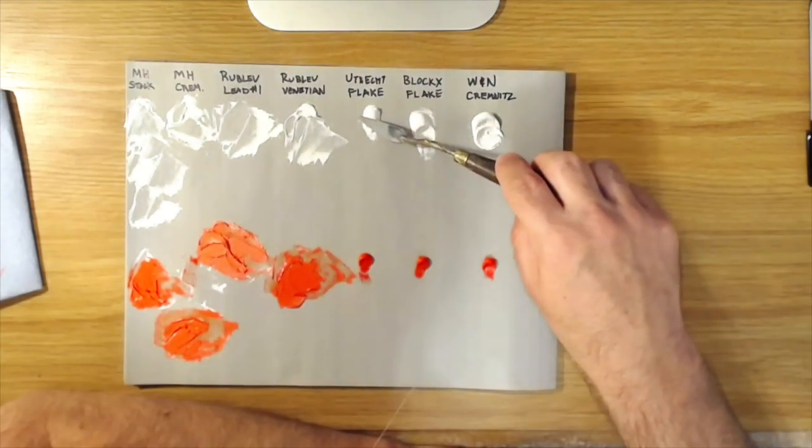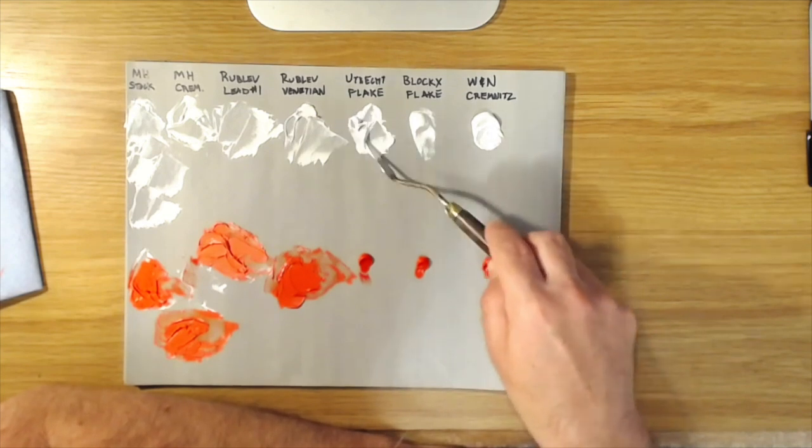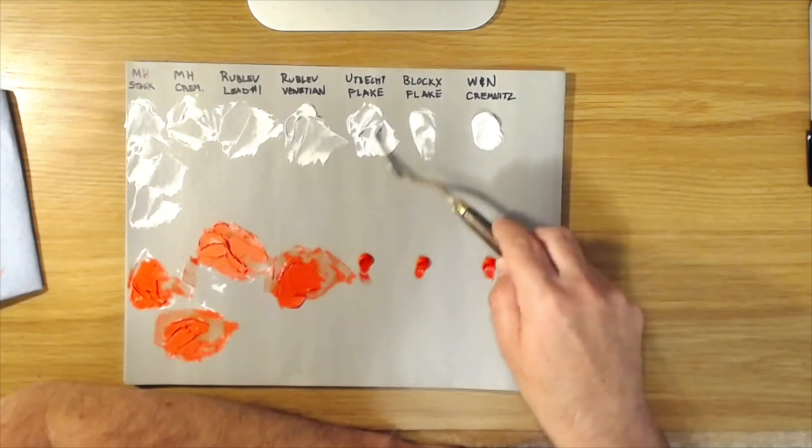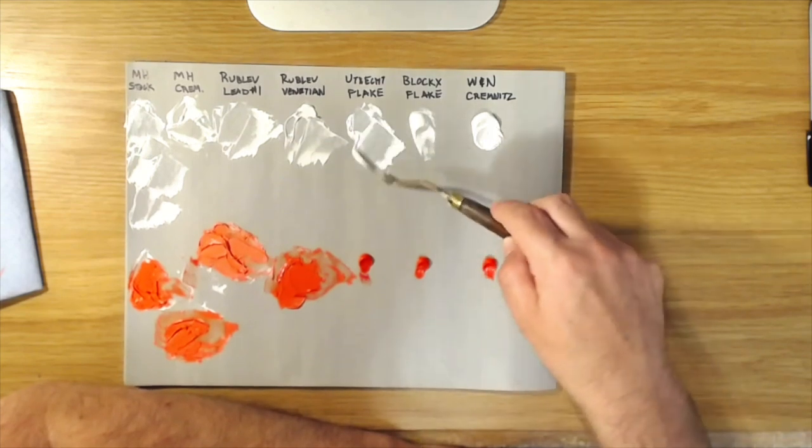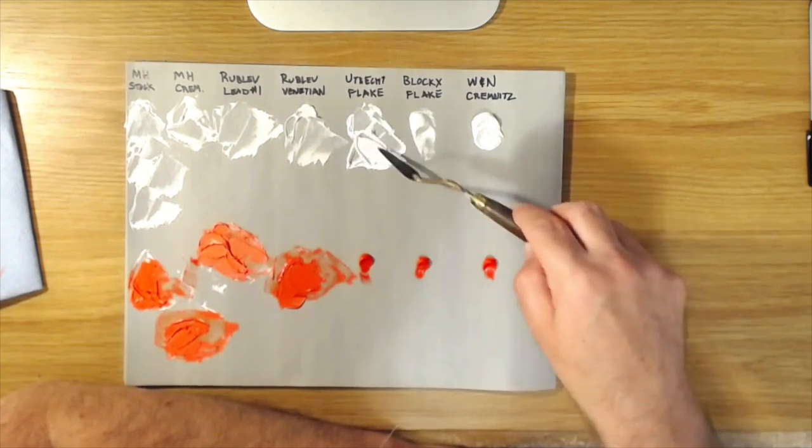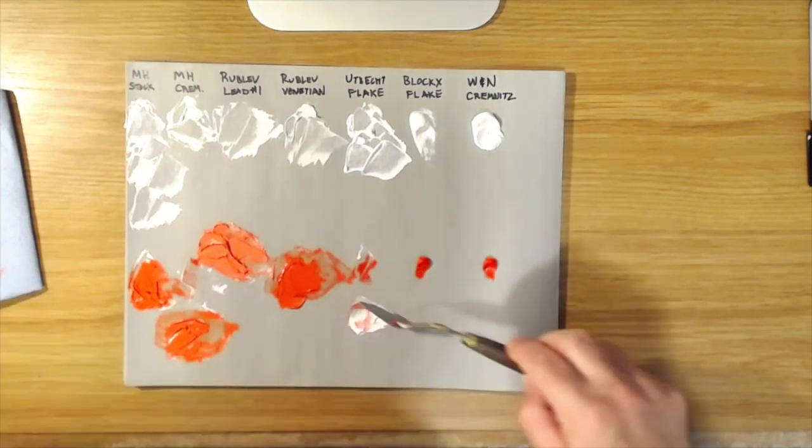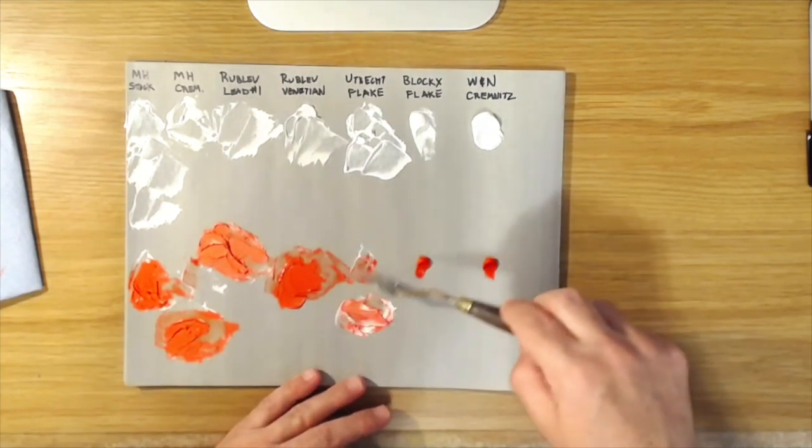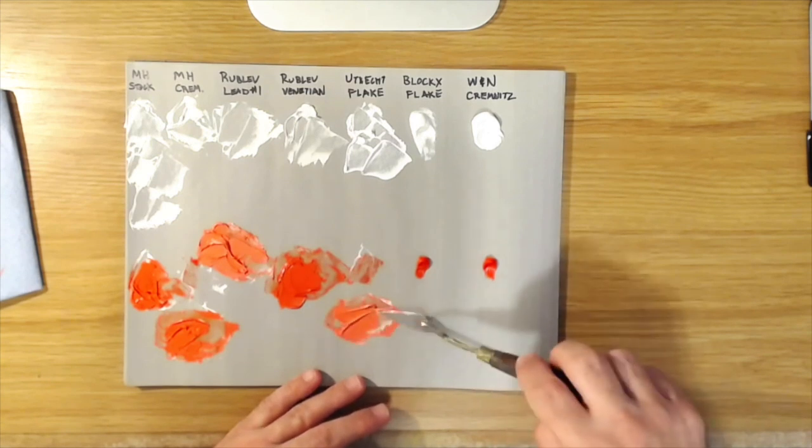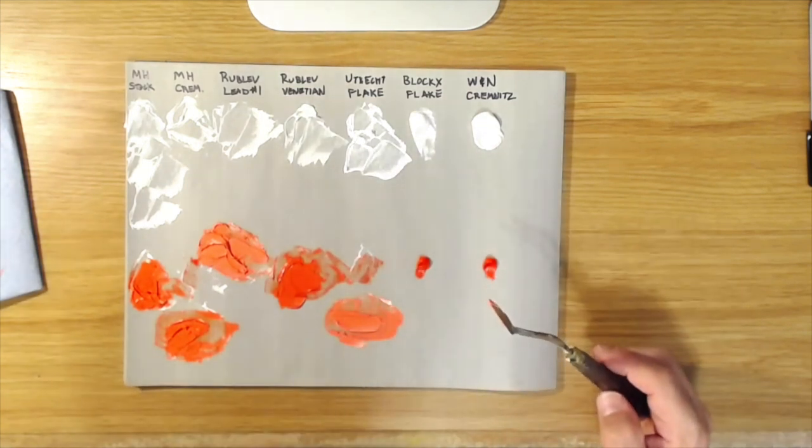Moving on to the Utrecht Flake White. This is a nice good sort of workhorse lead white. I do use it on occasion. Again, this is the commercially made pigment, so it doesn't have that ropey quality of the stack lead white, but it's a nice clean bright lead white. It's the whitest of all these, probably because it's got safflower oil in it. So if I mix it, let's see, you can see that one does have a little bit of a higher tinting strength.